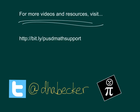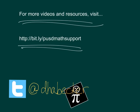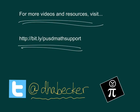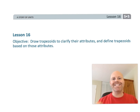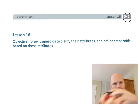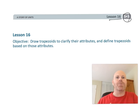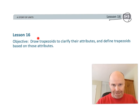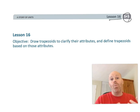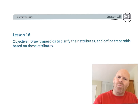This is fifth grade module 5 lesson 16. In this lesson we move away from the multiplying of fractions from all the previous lessons and go into classifying two-dimensional objects. We're really going to be focusing on trapezoids, because we have to agree on what a trapezoid is.